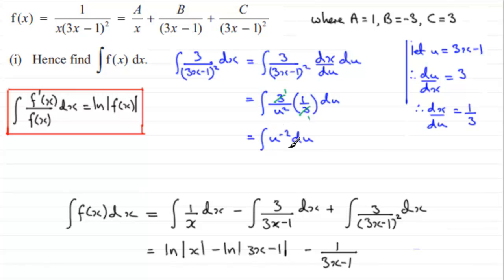Now all I've got to do is integrate u to the power minus 2 with respect to u, and that's easy. All I've got to do is add 1 to the power, that's u to the minus 1, and divide by the new power.